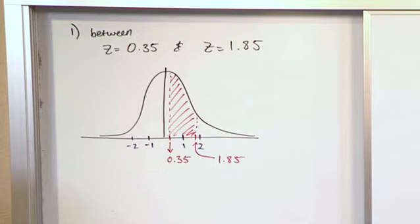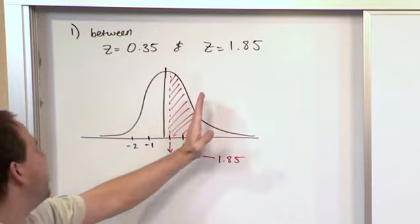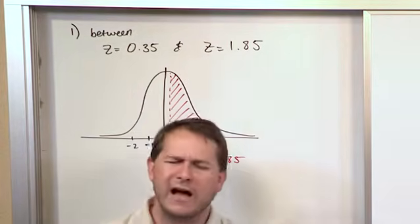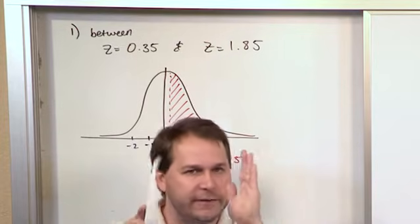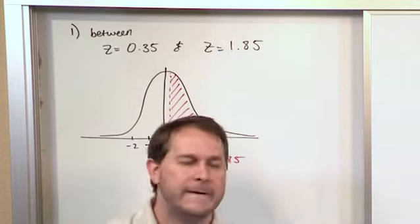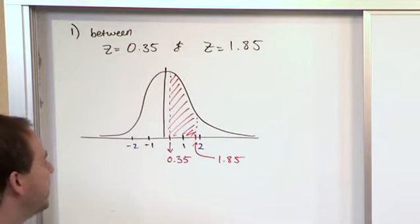A lot of times I might have a problem where I don't want to find the area off to the left. A lot of times you don't want that. You want to know the area between two values of z. But you want to use that same table that we've already used.